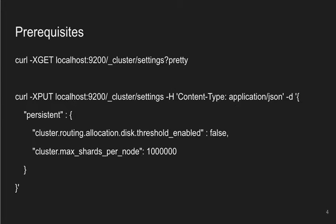If you want to turn that threshold off, you can use the curl command shown — specifically the third line of the second curl command. Another thing I found was you can only open a thousand shards per node, which is not a lot when you have 24 hours a day times however many logs you want to import. I create an index per log to keep indices small and manageable, so a thousand is pretty small. I moved mine up to a million — it'll be different for each machine.